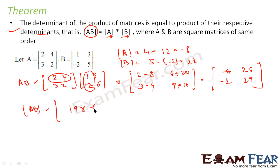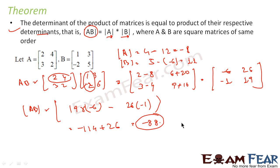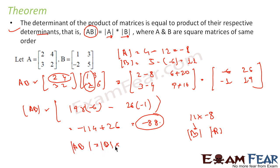Now we find determinant of AB. That is (−6)×19 minus 26×(−1), which gives −114 plus 26, and that is nothing but −88. If you see, this value is nothing but 11 into minus 8 — what is 11? Determinant of B. And what is −8? Determinant of A. So we have seen that determinant of AB is nothing but determinant of A into determinant of B. Similarly, determinant of BA is also equal to determinant of AB, because determinant is a real number and real number multiplication is commutative — it is not matrix multiplication.